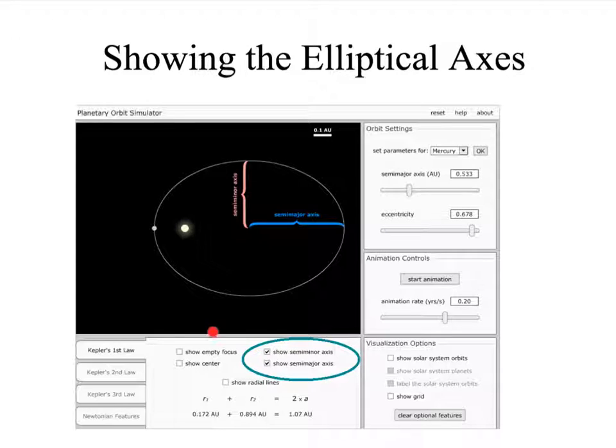Here I have unchecked the show empty focus and show center controls and I've checked the show semi-minor and semi-major axis controls. So these two axes are demonstrated here and you can see their size and of course they'll change as you adjust the size or the eccentricity of the ellipse.